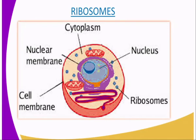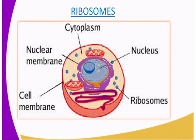We are going to our second organelle, which are the ribosomes. As you can see from our diagram, the ribosomes are composed within the cytoplasm, the nuclear membrane, the nucleus, the cell membrane, and also the ribosomes themselves. The ribosomes are spherical in shape. Some are scattered within the cytoplasm, while others are bound to the surface of the rough endoplasmic reticulum. Their function is to form the site for protein synthesis.